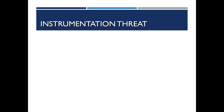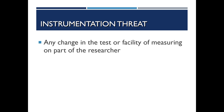The instrumentation threat happens when we try to address the multiple testing effect by changing the instrument — using a different pretest than the post-test — but sometimes changing it can also lead to different results. The instrumentation threat is any change in the test itself or in the way the researcher measures. For instance, over time researchers may become more familiar with the instrument and administer it differently. Anything related to the instrument itself can threaten internal validity.